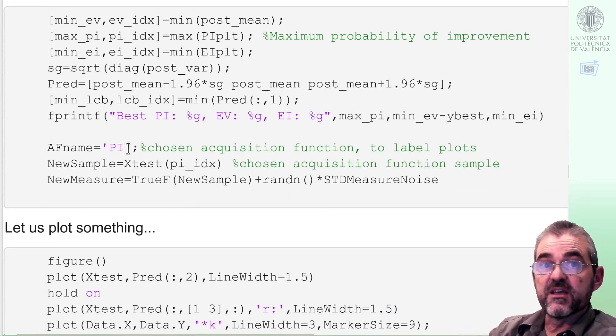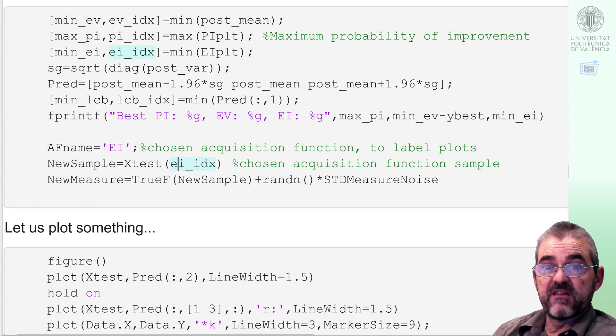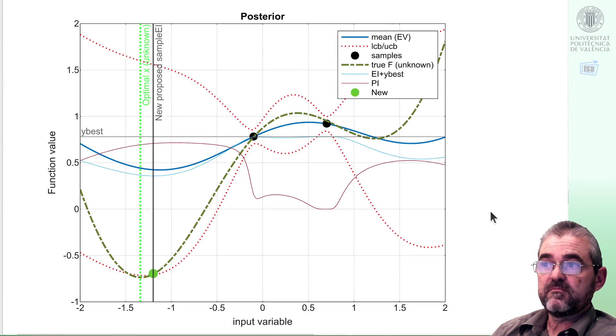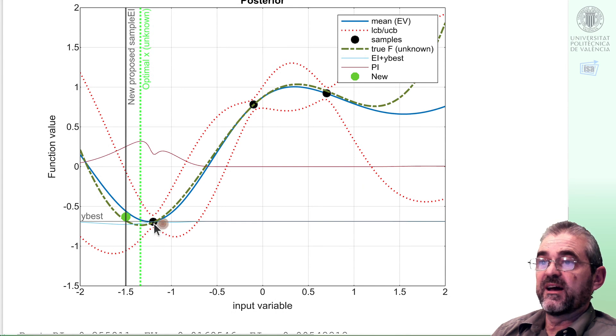If I change my acquisition function to expected improvement, then we find similar behavior. The first proposed sample is almost there. When I acquire it, even if it's almost at the lowest expected value, expected improvement is a little bit more optimistic and it explores here to the left.